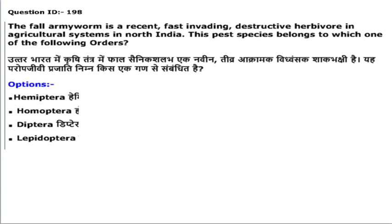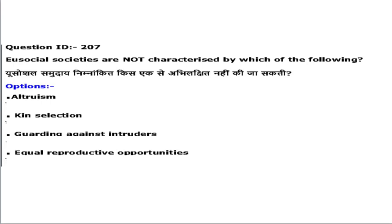Fall armyworm is a fast-invading, destructive herbivore insect in agriculture, particularly in North India. The question asks which order this pest belongs to. Fall armyworm belongs to the order Lepidoptera. A detailed video for unit number 9 on diversity of life forms is available with complete notes.